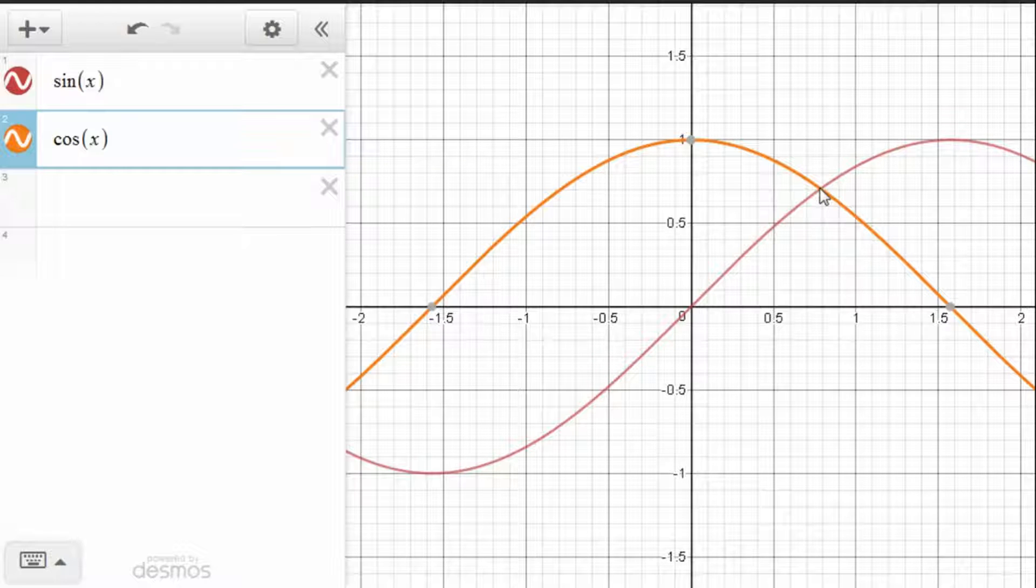So 0.7 squared would be 0.49, right? And adding to that the other function, squared, so 0.7 squared being 0.49 again, we add those two up. 0.49 plus 0.49 is about 1, right? That's about 0.5 plus 0.5. And since we can't be exactly sure of where these are crossing, that seems like that would make sense.